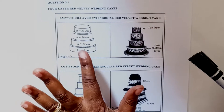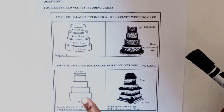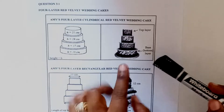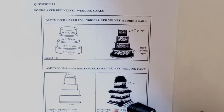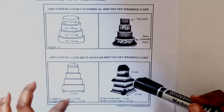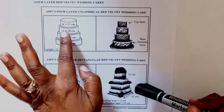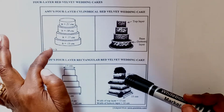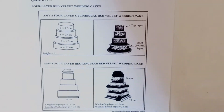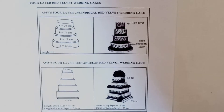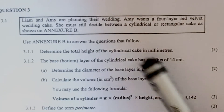Here are the two cakes: the cylindrical one and the rectangular one. They show you the cake without the actual drawing, and here is what the actual cake will look like with the decorations around it. The dimensions are drawn on the cake. When you go to a particular question, read everything they're asking. This is a four-layer cake — one, two, three, four — so each cylinder will have a different height and a different radius. When you look at this question it may look difficult, but it actually isn't once you read it carefully.